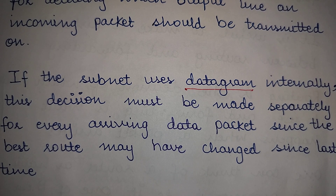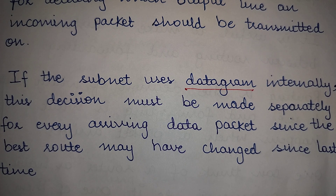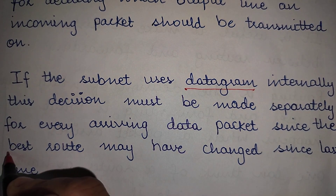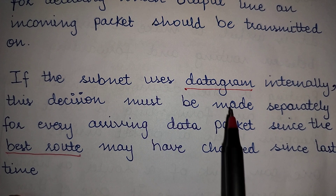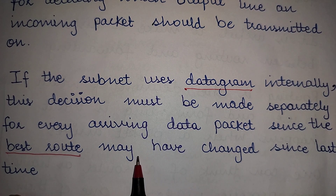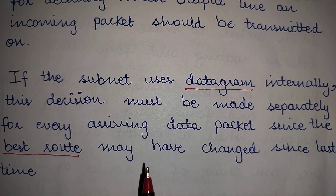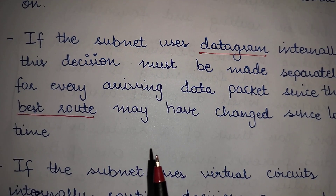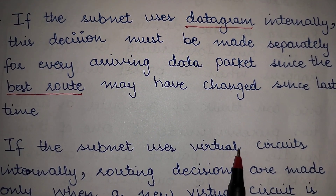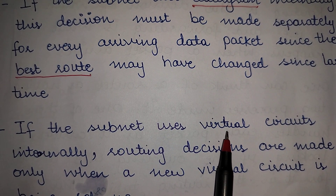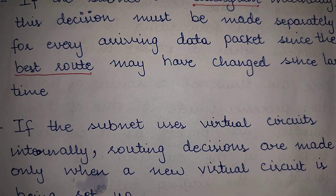Since there is no dedicated connection, all available routes may be used by different sources and destinations. Depending upon the best route available at that particular point in time, every data packet would be forwarded through a different or same outgoing line. Now if this subnet uses virtual circuits — virtual circuits are used in case of connection-oriented services.